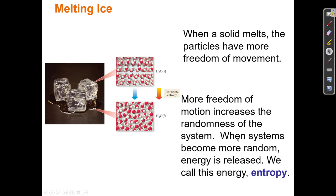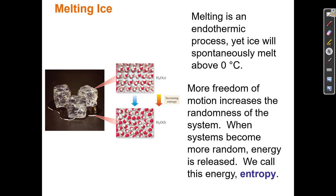When systems become more random, energy is released, and we call this energy entropy. In solid ice all the particles are stuck together — like in diamond — none of them are moving. But when ice melts, the particles are able to move around a little bit, just like layers of graphite can slide because they're not bonded in the middle. These water molecules moving around creates more randomness, which creates more entropy, and that causes the melting process to be spontaneous at certain temperatures. Whether melting is spontaneous depends on the difference between enthalpy — the strength of all the bonds — and entropy — the randomness of the motion.